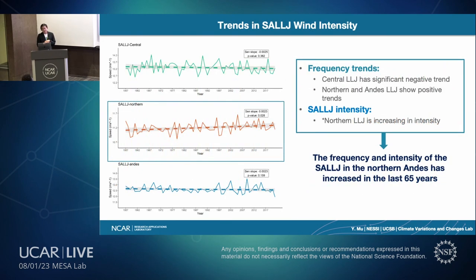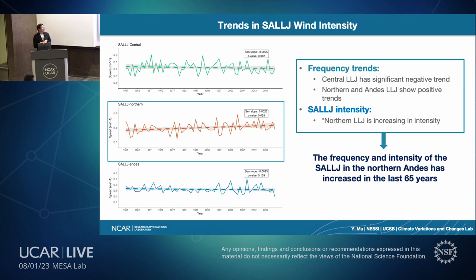Looking at wind intensity trends, only the northern low-level jet type shows a significant increasing wind speed trend. So our first conclusion: central low-level jet has a significant negative frequency trend while northern and Andes show positive trends. Combined with the intensity trends showing only the northern jet increasing, we conclude that the frequency and intensity of the northern low-level jet have increased over the last 65 years.